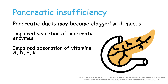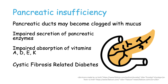This problem may become so severe that cells in the pancreas start to die, including cells in the islets of Langerhans such as the beta cells responsible for secreting insulin. This leads to cystic fibrosis-related diabetes, which is a type of insulin-dependent diabetes.